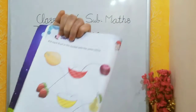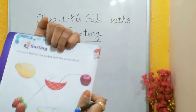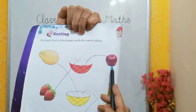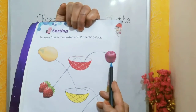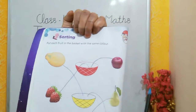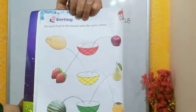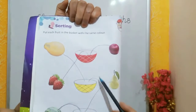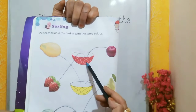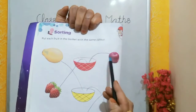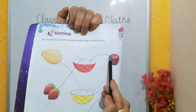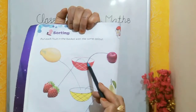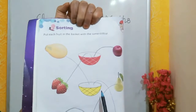Now, what is this? Apple. What is the color of apple? Red. And where is the red colored basket? Find out. Yes, it is red color. So we will put the apple in the red color basket.